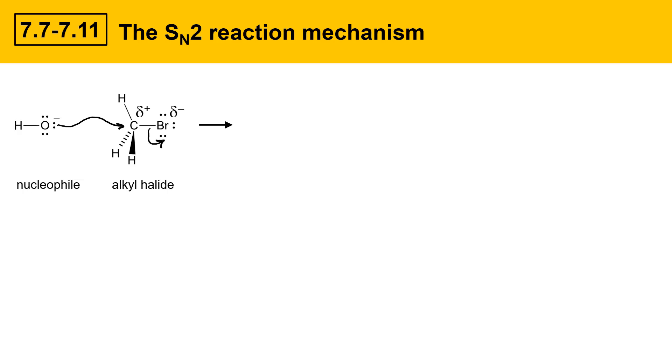As the molecule proceeds through this mechanism, as the nucleophile starts to get close to the alkyl halide, it goes through something called a transition state. There's a point at which the nucleophile is getting close to that carbon, and the leaving group is starting to leave. The point at which it's kind of halfway through that, this is the transition state.